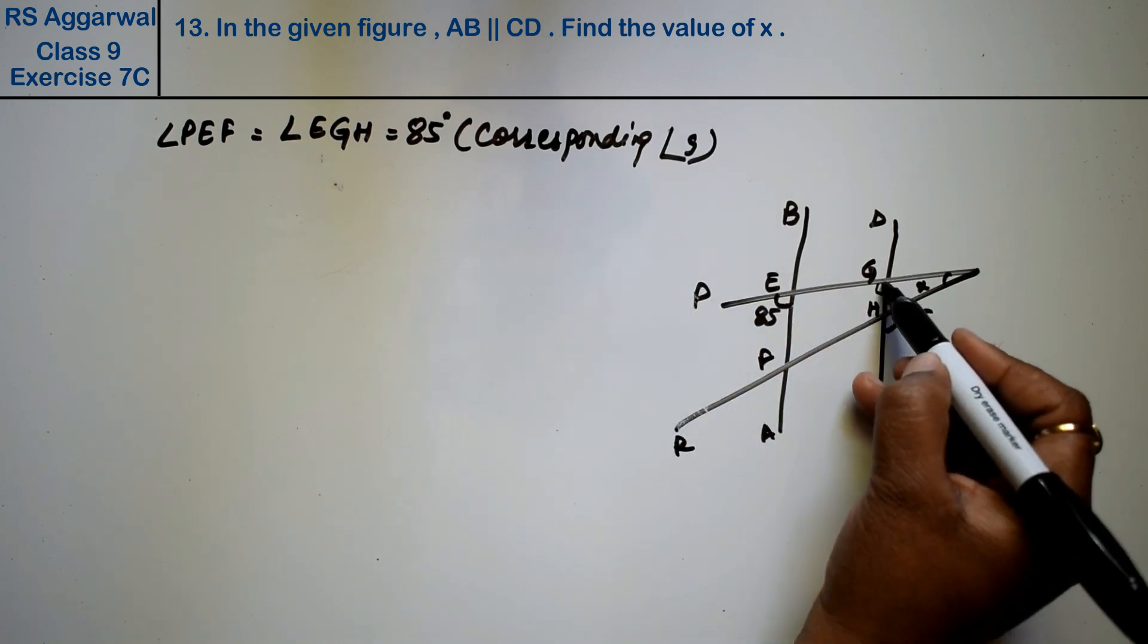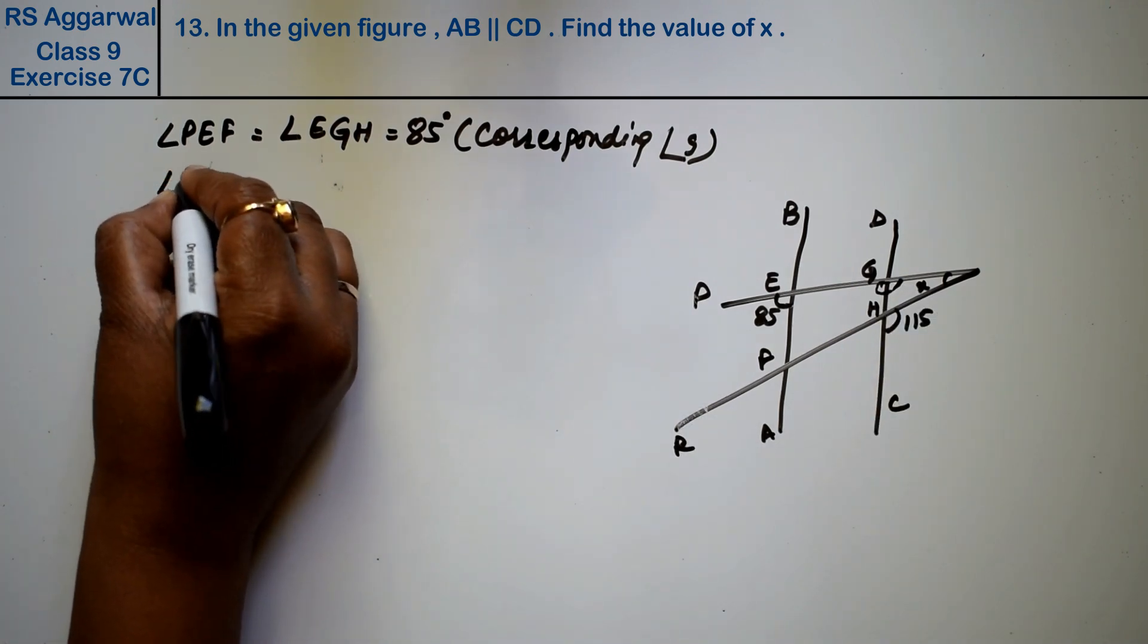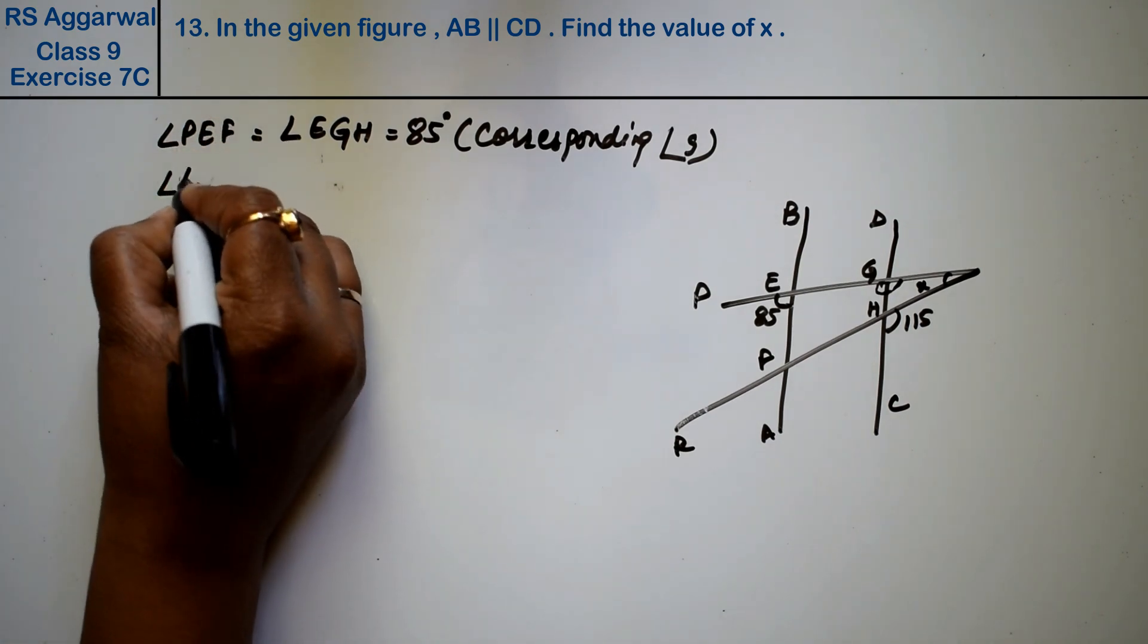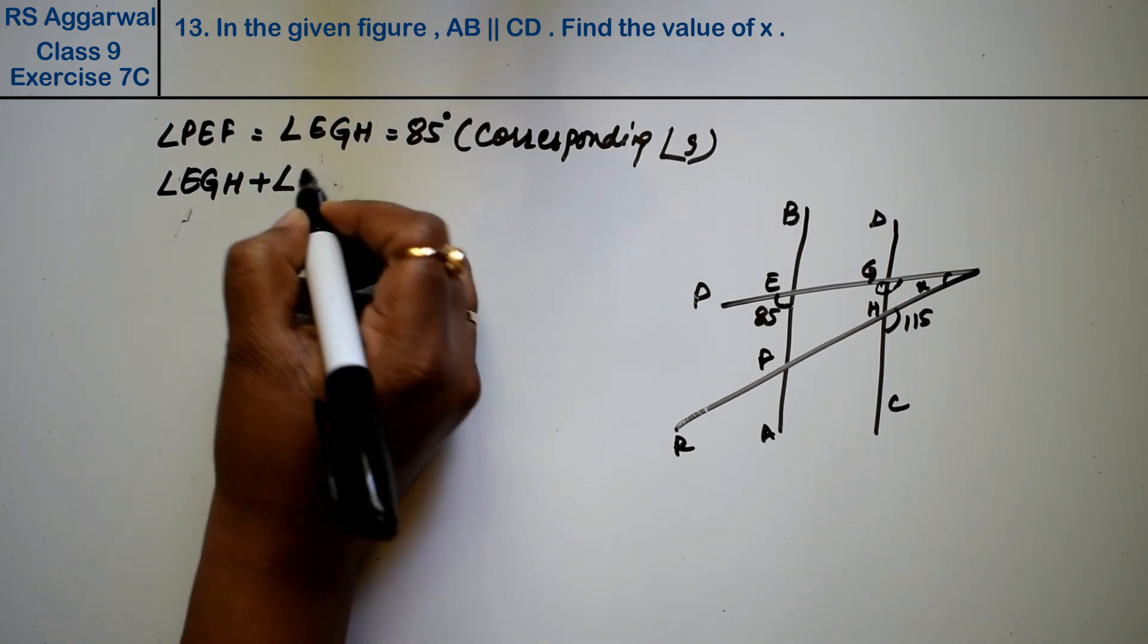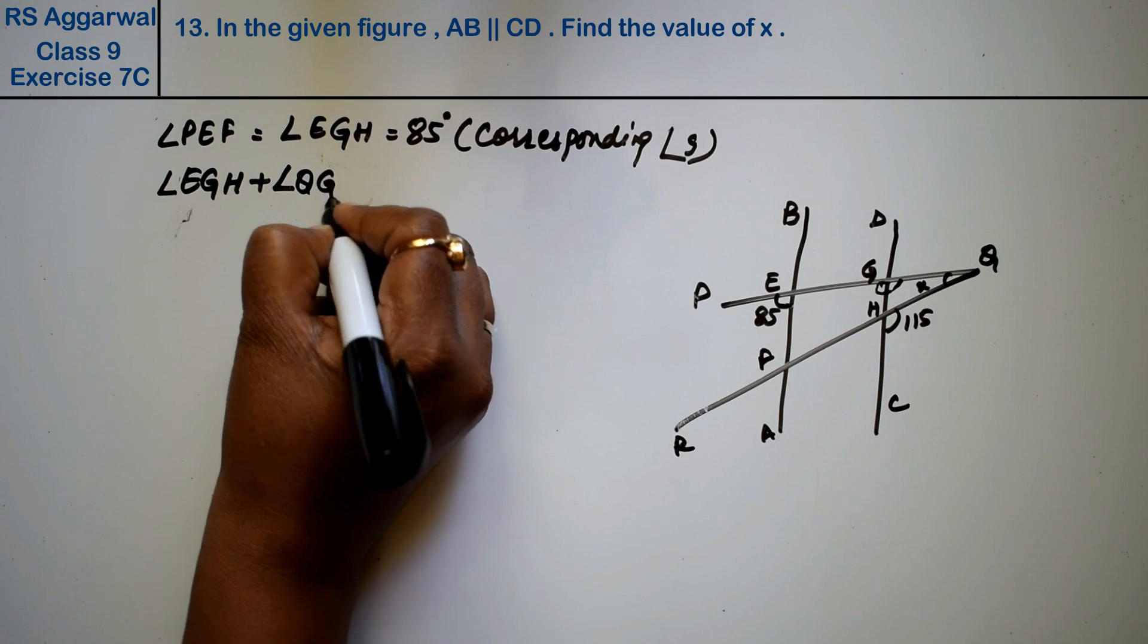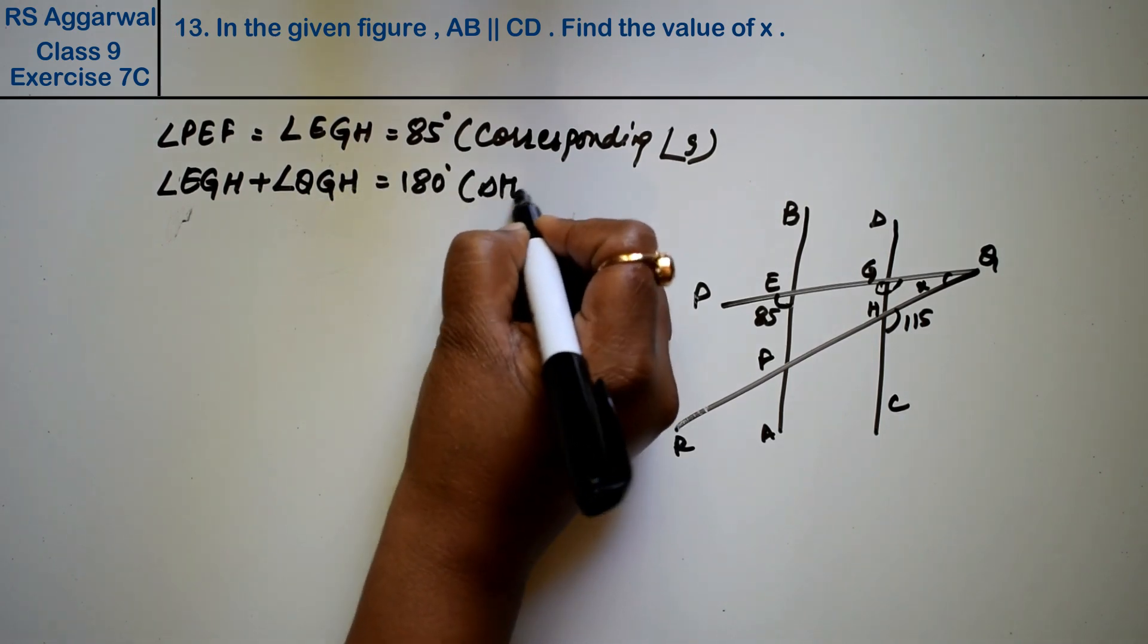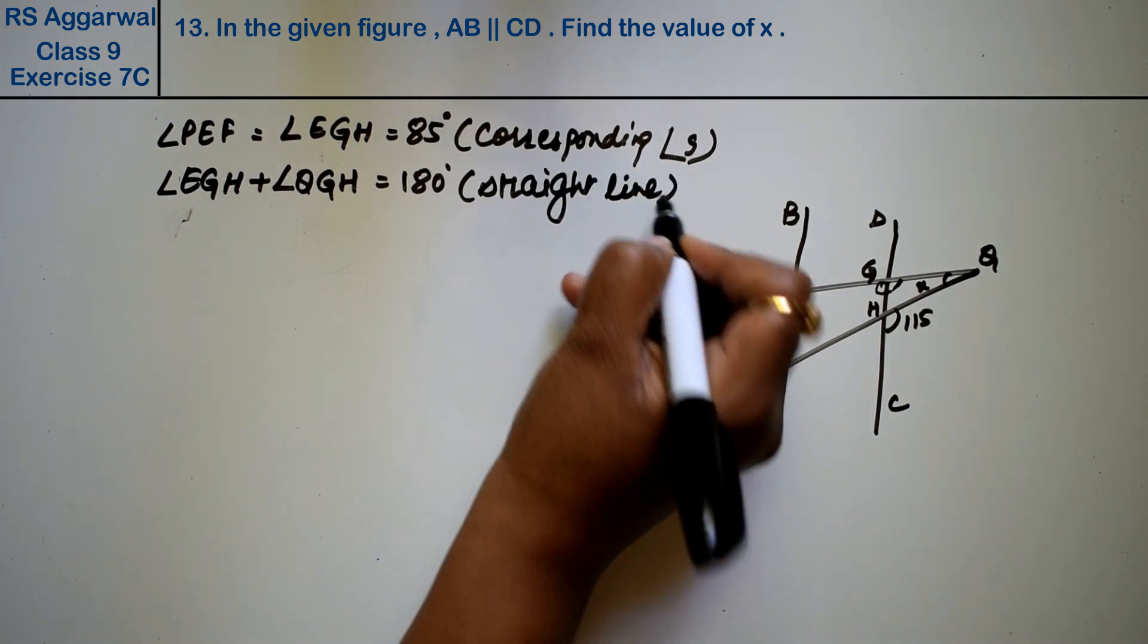Now, if this is a straight line, we can use that property. So angle EGH plus angle QGH equals 180 degrees because this is a straight line and we know that a straight line angle is 180 degrees, right friends.